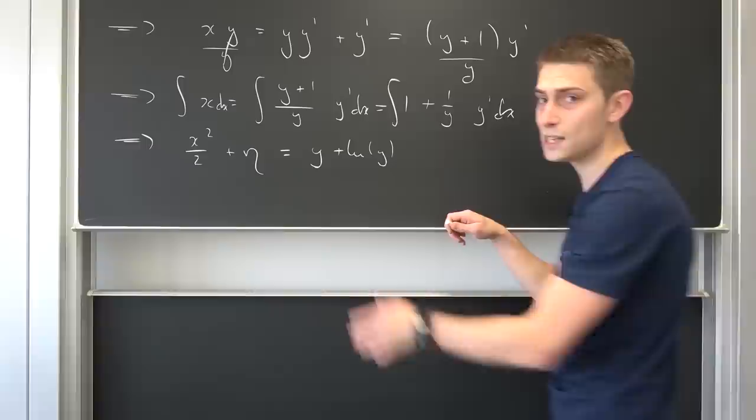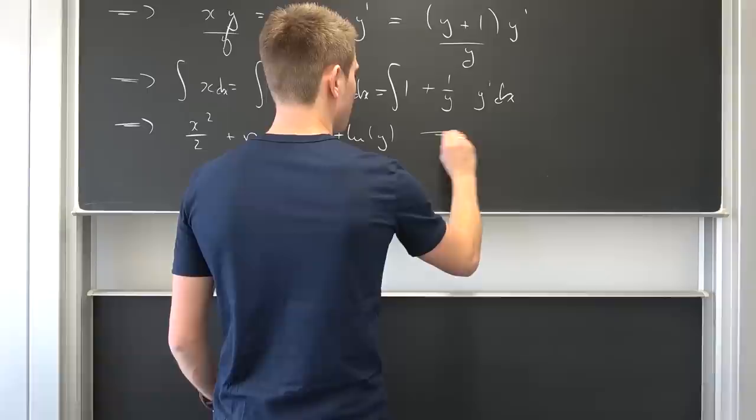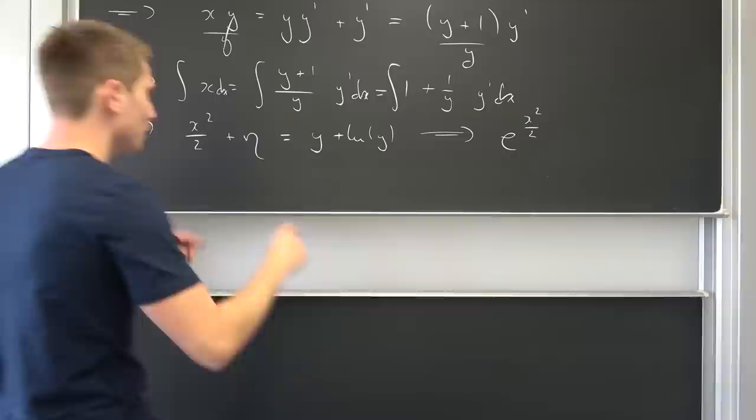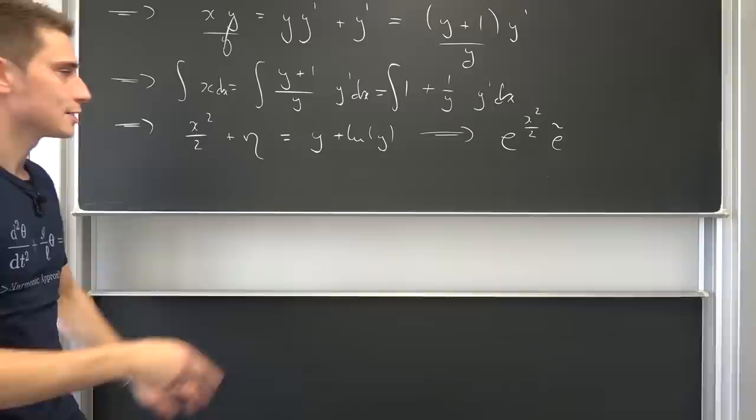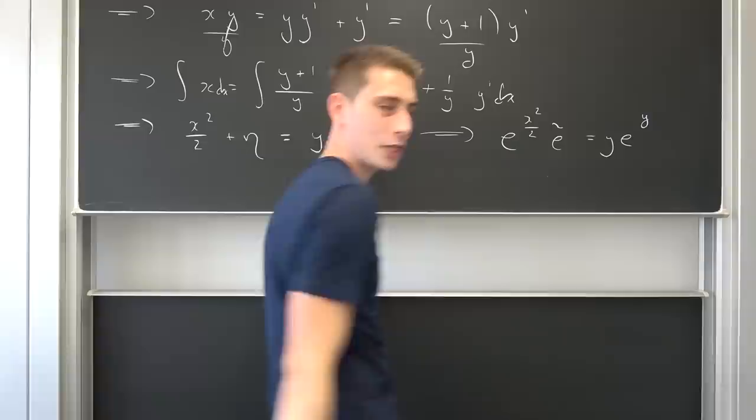That's basically the solution to our differential equation. We could raise both sides to base e to end up with a final expression for y. Meaning if we use base e on both sides, we get e to the x squared over 2 plus eta, which is the same as e to the x squared over 2 times e to a constant — I'll call it e_snag. Also we end up with e to the y times y, and this should ring a bell for you.